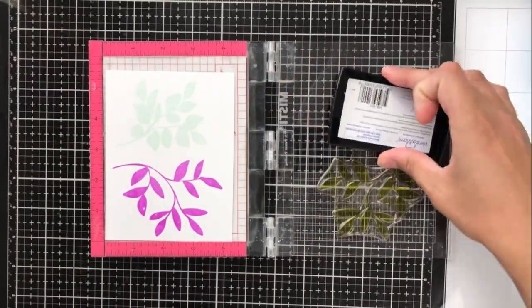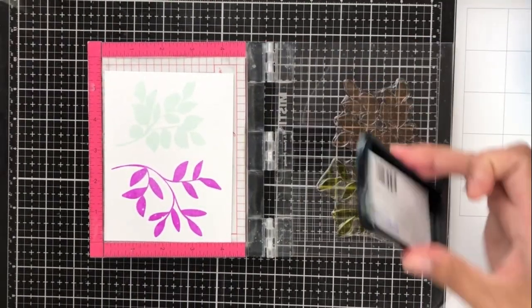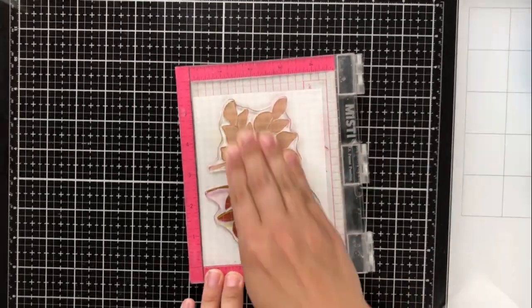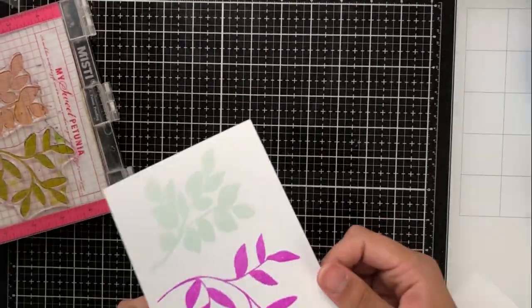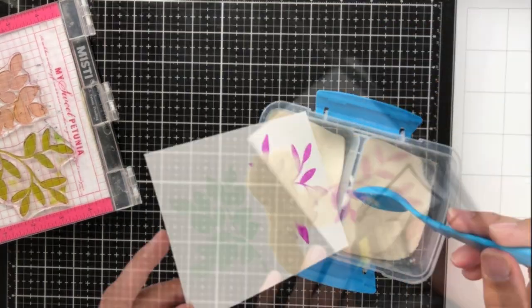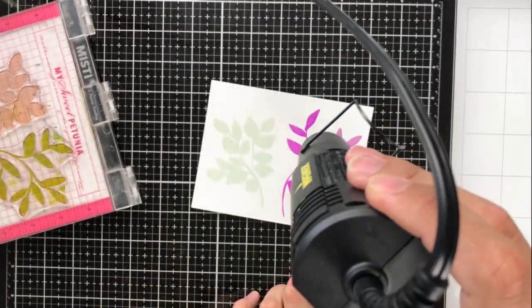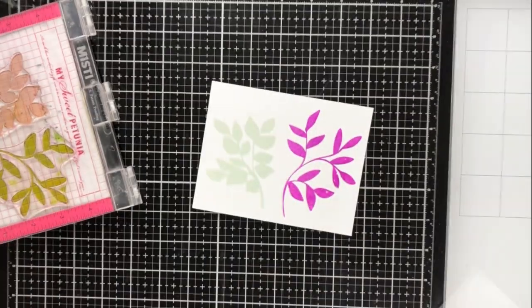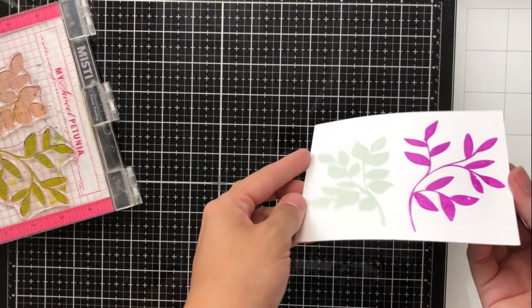And to make these a little shinier and to stand out a little bit more, I'm going to go over them one more time with Versamark ink, and then I'm going to put some clear embossing powder over that and heat it with my heat gun. This will make it a little more textured, a little shiny, and it's going to make the colors pop a little bit more.